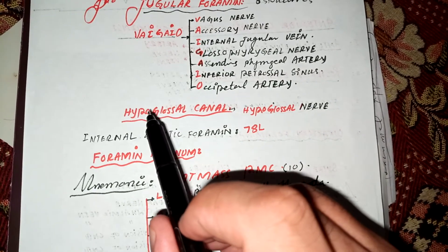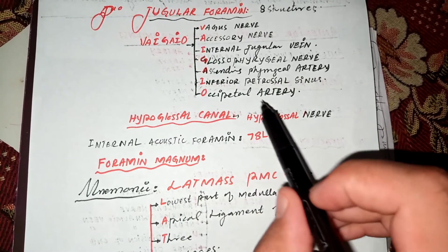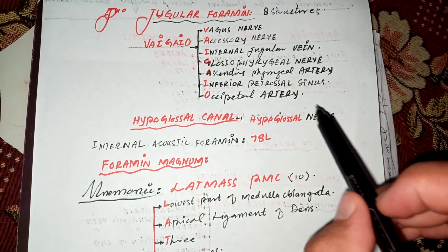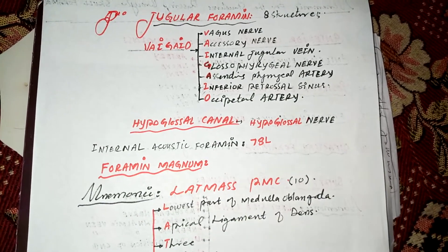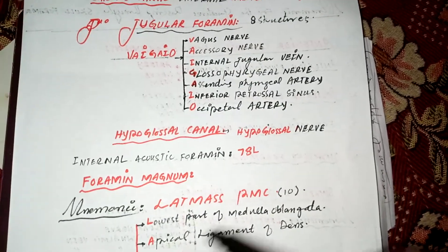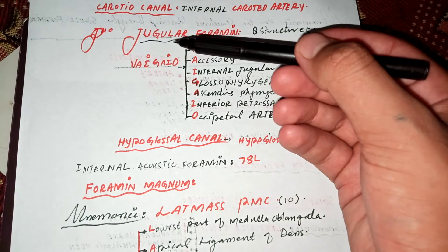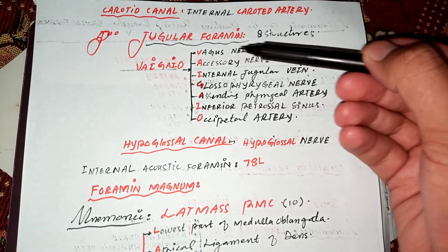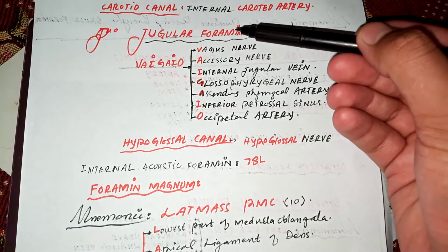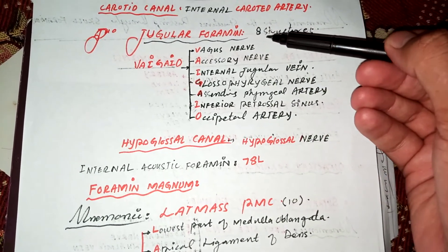Another foramina is the hypoglossal canal — only the hypoglossal nerve passes through the hypoglossal canal. The fourth foramina present in the posterior cranial fossa is the jugular foramen.